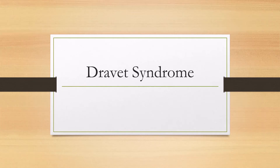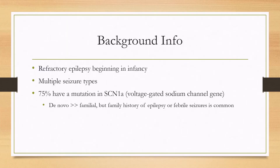Let's talk about Dravet syndrome. This is a refractory epilepsy that begins in infancy and is characterized by having multiple seizure types. One important mutation to know is that in about 75% of patients, they will have a genetic mutation in the voltage-gated sodium channel gene SCN1A. Most of these mutations arise de novo, but some of them can be familial. A family history of epilepsy or febrile seizures is common to see in these patients.